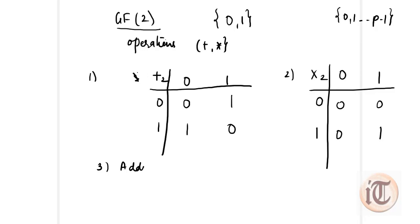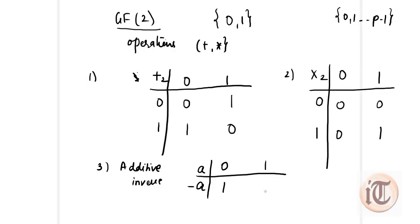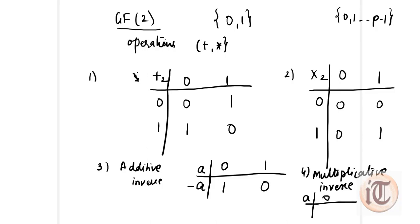Third, we find the additive inverse, represented as minus a. For element 0, the additive inverse is 0, and for element 1, the additive inverse is 0. The last matrix is the multiplicative inverse, represented as a to the power minus 1. For 0, the multiplicative inverse does not exist (represented as dash), and for 1, the multiplicative inverse is 1. This is how we define GF(2).